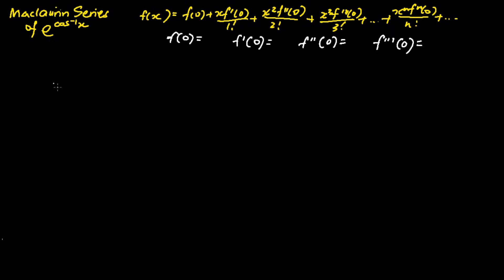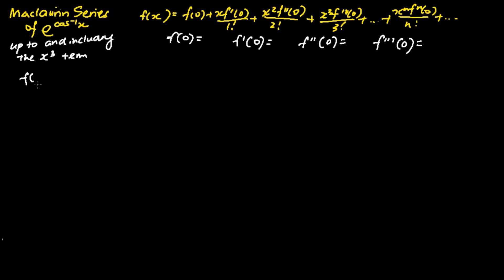For this particular problem, we will express the Maclaurin series of e to the power cosine inverse x up to and including the x cubed term. The first step is to define f(x) as e to the power cosine inverse x.